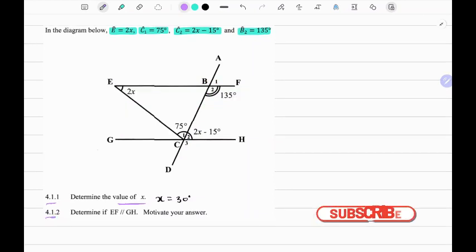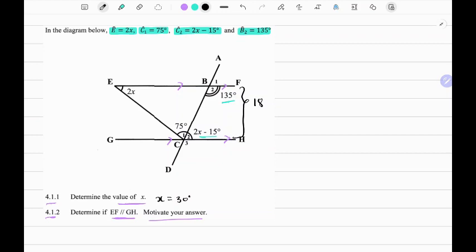The next question says determine if EF is parallel to GH, motivate your answer. One way to show that EF is parallel to GH is to prove that angle B2 and angle C2 are co-interior angles. That is, their sum adds up to 180 degrees. So let's see if this is true.